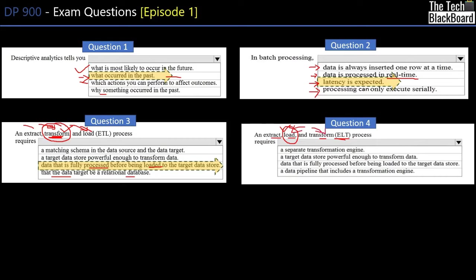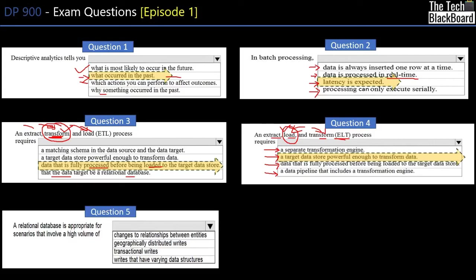In the ELT process, you load data first before transforming it. When you load a big chunk of data, you need something powerful to process it. The options include: a separate transformation engine; a target data store powerful enough to transform the data; data fully processed before being loaded to the target store; or a data pipeline that includes a transformation engine. Since you load before transforming, you need something powerful, so the correct answer is 'a target data store powerful enough to transform data.'